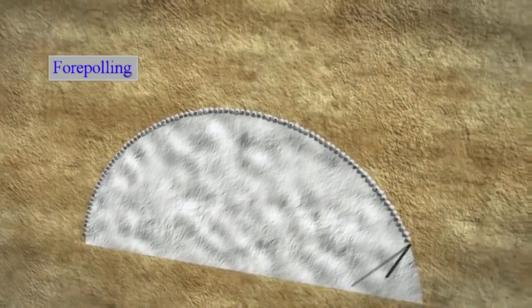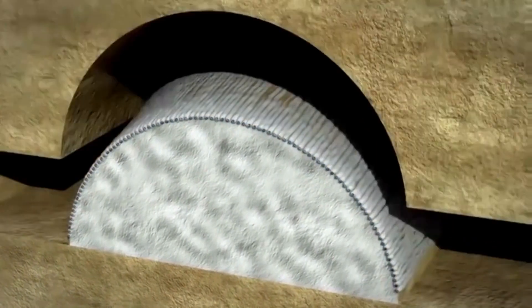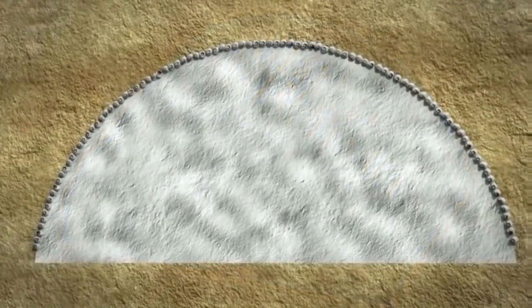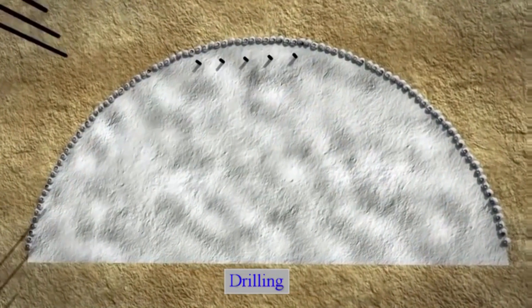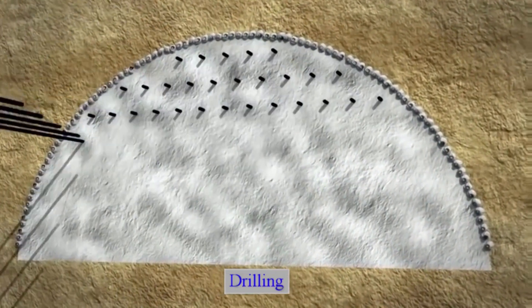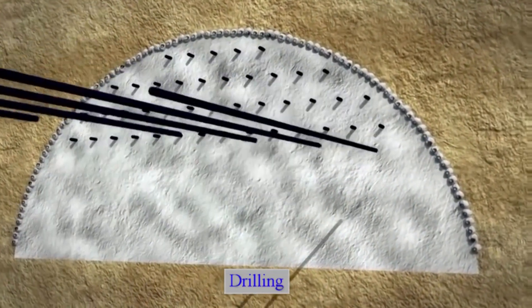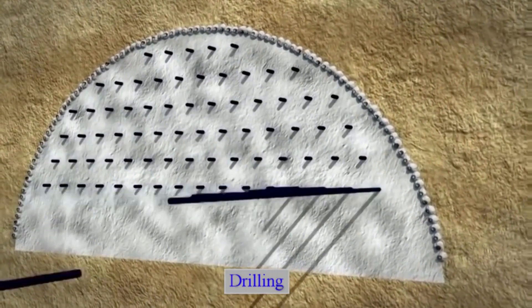The construction process begins with initial surveying and geotechnical investigations. The engineers study the geological conditions of the tunnel route, assessing soil stability, rock formations, and potential hazards.